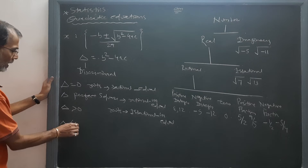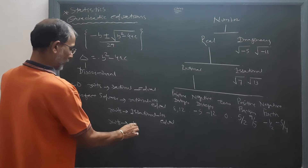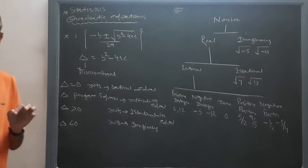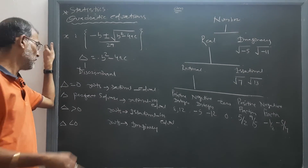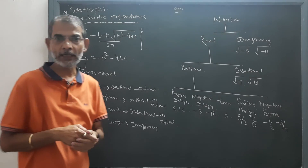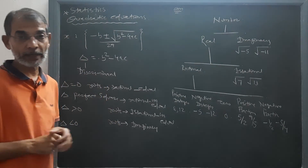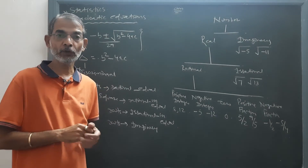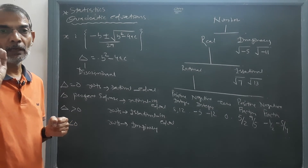If the discriminant is less than zero, then roots will be imaginary. In this way, there are four cases: if discriminant equals zero, roots are rational and equal; if discriminant is a perfect square, roots are rational and unequal; if discriminant is greater than zero and not a perfect square, roots are irrational and unequal; and if discriminant is less than zero, roots will be imaginary.